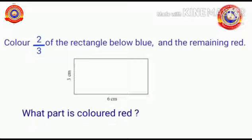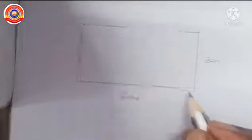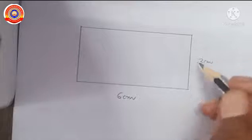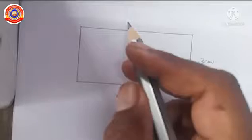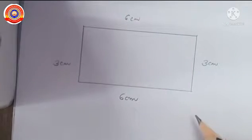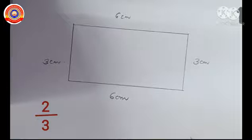Next activity: color 2/3 of the rectangle below blue and the remaining red. What part is colored red? Here we have to construct a rectangle with 6 cm length and 3 cm breadth. We know that in a rectangle, its opposite sides are equal. So this side is 6 cm and this side is 3 cm. Next, we have to find the 2/3 part of this rectangle. In 2/3, 3 is the denominator.